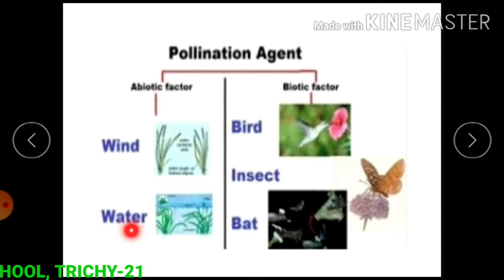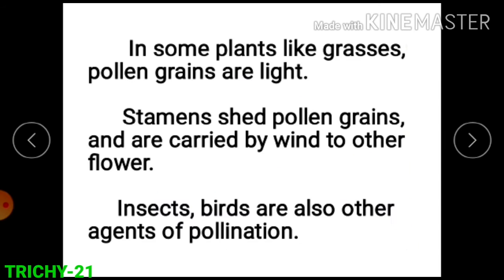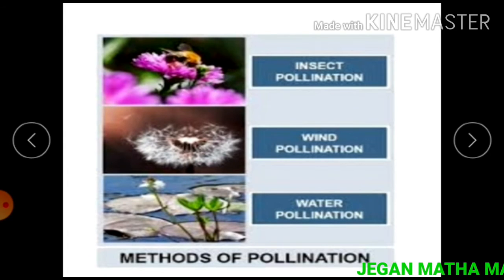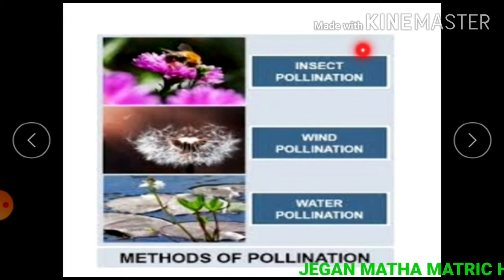Wind, water, birds, insects, and bats are the pollinating agents. In some plants like grasses, pollen grains are light and stamens shed pollen grains that are carried by wind to other flowers. Birds are also agents of pollination. The agents that help in pollination are called pollinators or pollinating agents.